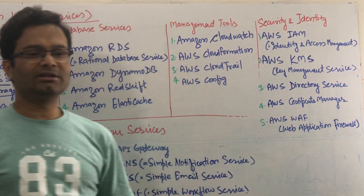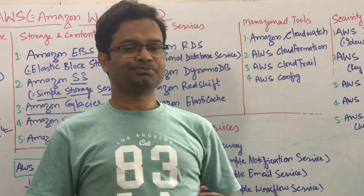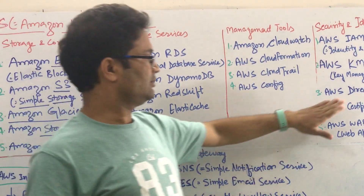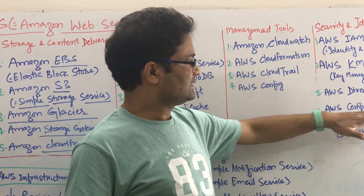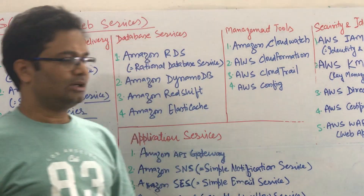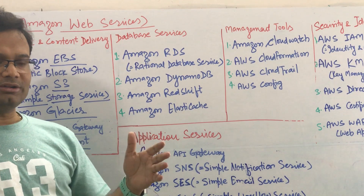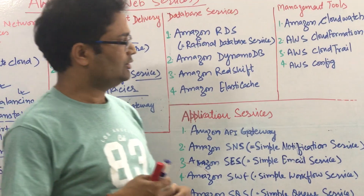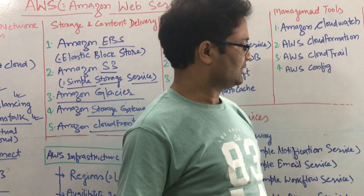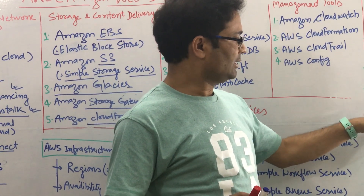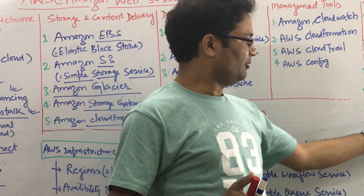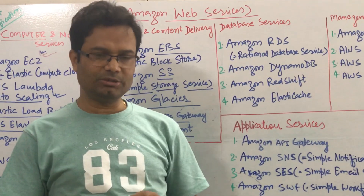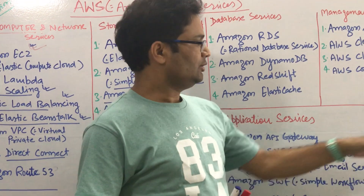Directory Service — like Microsoft Active Directory — those kinds of facilities you can get through the Directory Service. Certificate Manager provides provisioning and maintaining of all certificates — you can maintain all kinds of certificates through this. And the firewall — AWS WAF, we have the application firewall. If you want to give firewall protection to your website, you can do that.